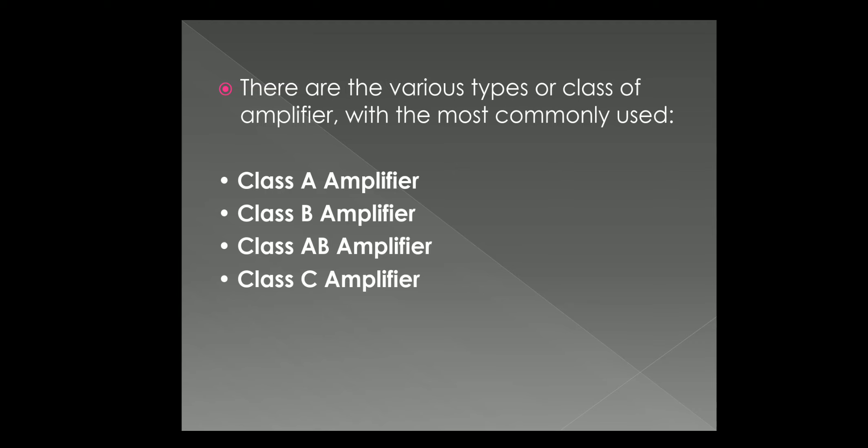The next one is Class AB amplifier. It has the efficiency rather between Class A and Class B but it has poorer signal reproduction than Class A amplifier.